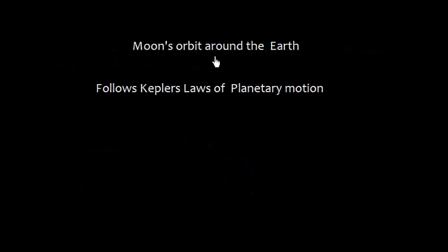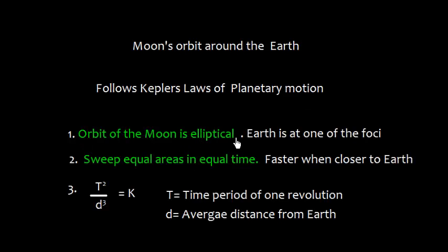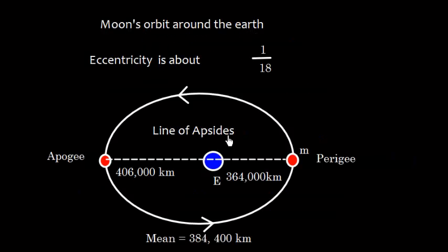The Moon's orbit around the Earth also follows Kepler's laws of planetary motion, similar to a planet revolving around the Sun. The orbit is elliptical, Earth is at one of the foci, and the Moon sweeps equal areas in equal intervals of time — meaning the Moon is faster when closer to Earth and slower when farther away.